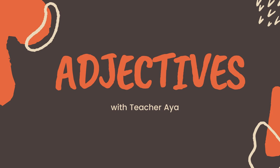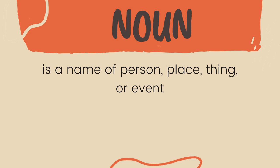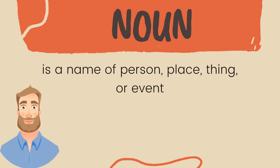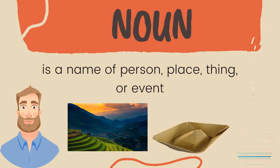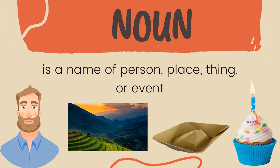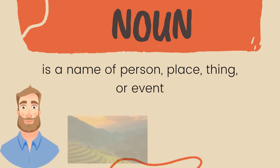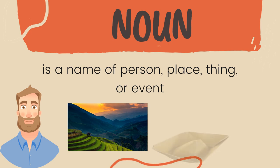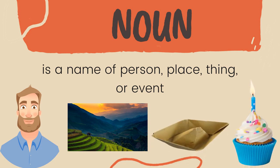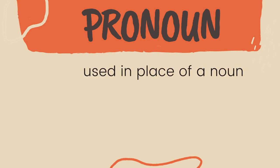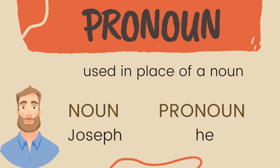But before that, let us quickly review nouns and pronouns. A noun is a name of a person, place, thing, or event — like Joseph, Rice Terraces, Boat, and Birthday. A pronoun is used in place of a noun. For example, the word 'he' is used to replace the name of Joseph in a sentence so it's not redundant.